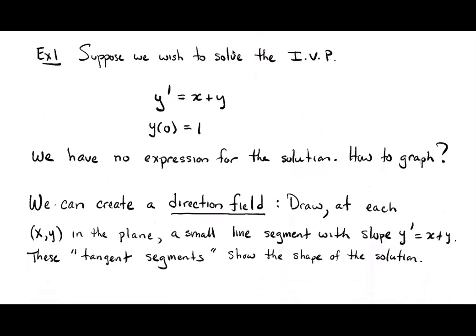To motivate the topic, consider the form y prime equals f(x,y), where f(x,y) is x plus y. Suppose I wanted to solve the initial value problem y prime equals x plus y, subject to the initial condition y(0) equals 1. It's an initial value problem because it has a differential equation plus an initial condition — I want the solution to pass through the point (0,1). But I can't solve it by integrating because it has the output variable on the right-hand side. So I have no formula for the solution, but I still want to analyze it.